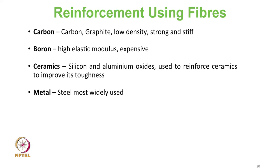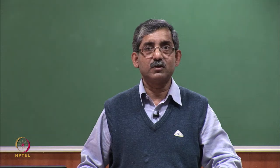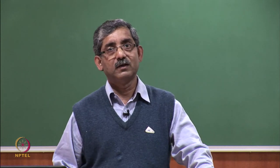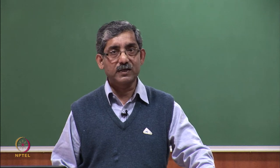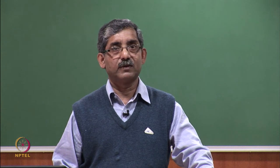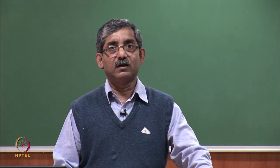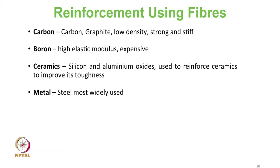Boron is also used; it has a very high elastic modulus. However, the main problem with boron is its very high cost, which is why it is not used in general applications — only in very high-end applications like aerospace components. Ceramic fibres such as silicon carbide and aluminum oxide are also used; they have high elastic modulus and can be used to strengthen low-density, low-modulus metals such as aluminum and magnesium.